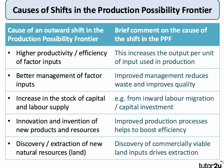Third, the PPF shifts out when more resources become available — for example, investment lifting the stock of capital, or inward migration increasing the supply of labour. Fourth, innovation and invention: developing new products, new resources, and finding better ways to produce goods or services through process innovation makes businesses more productive. Fifth, the discovery and commercial extraction of new natural resources will drive an increase in productive potential. Those are the key factors causing an outward shift.